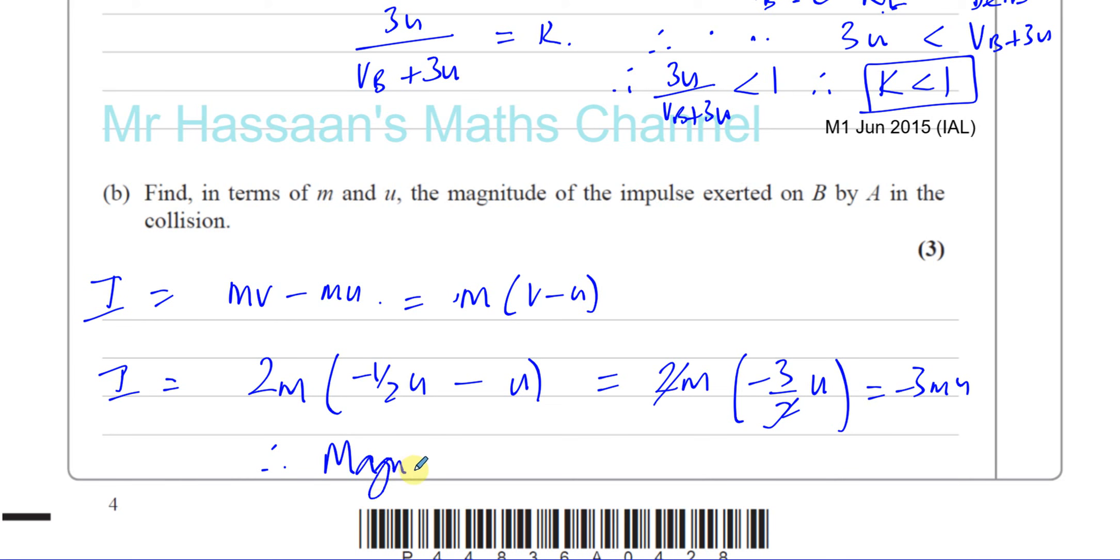of course, you have to write it as a positive value, which is equal to 3MU. In terms of M and U. And that's in kilogram meters per second, if you want. Or you can say Newton seconds.